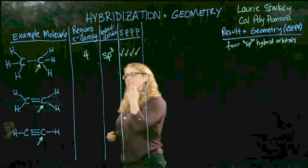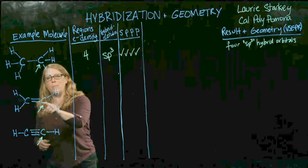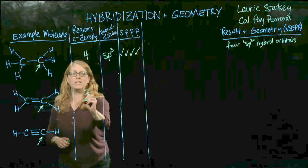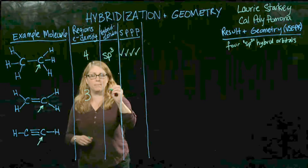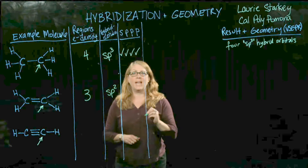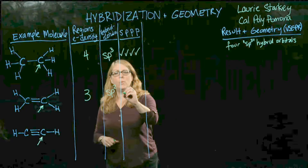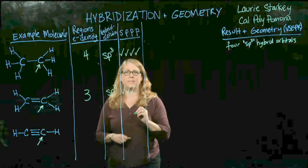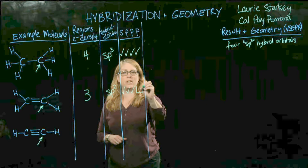In our next compound, this carbon still has four bonds, but they're arranged differently. We have the double bond and two single bonds, so we have only a total of three regions of electron density around the carbon. Such atoms will undergo a hybridization described as sp2. We call it that because to undergo the hybridization, we combine the s orbital with only two of the p orbitals, and that leaves one of the p orbitals unchanged — unhybridized.